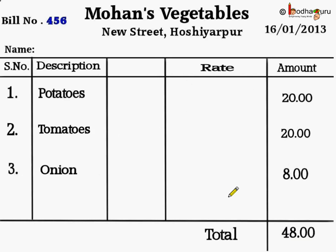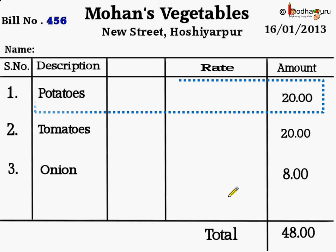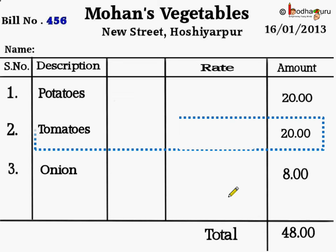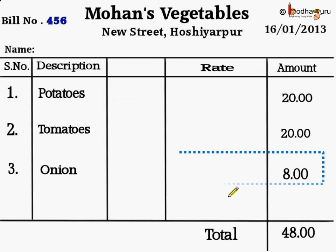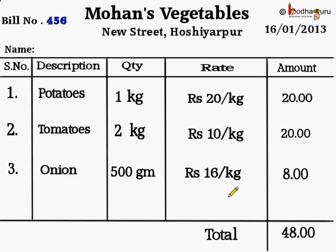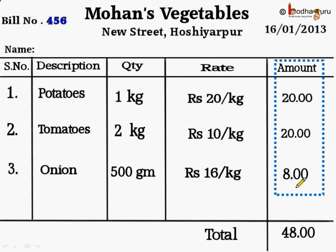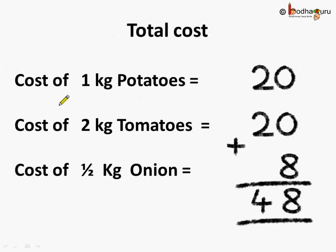Let's see the bill again. The lady paid Rs. 20 for potatoes, Rs. 20 for tomatoes, and Rs. 8 for onions. Adding 20 + 20 + 8 gives us 48. So the total amount paid by the lady was Rs. 48.